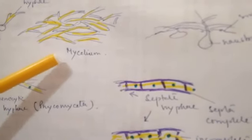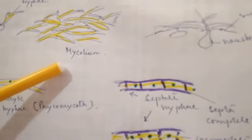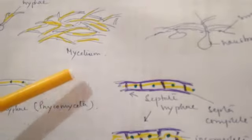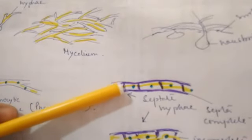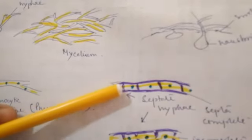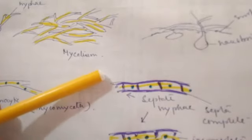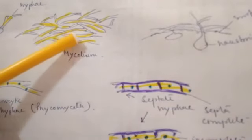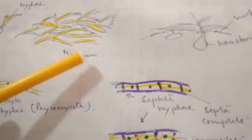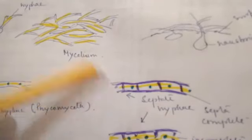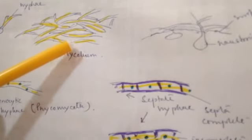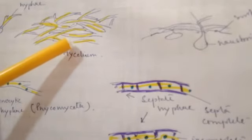The reserve food in fungi is glycogen, like that of animals. Unlike plants, where the reserve food is starch, in fungi the reserve food is glycogen.